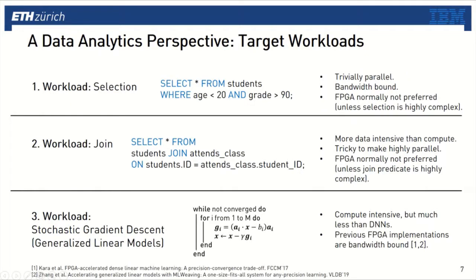The third workload is stochastic gradient descent on linear models. This algorithm is definitely more compute intensive compared to relational workloads such as joins or selection, but still much less compute intensive compared to deep neural network inference or training. Therefore, it can be made easily bandwidth bound on the FPGA, as shown by previous work. Since FPGAs were disadvantaged regarding bandwidth, speed-ups against high-end CPUs remained limited even for this algorithm.